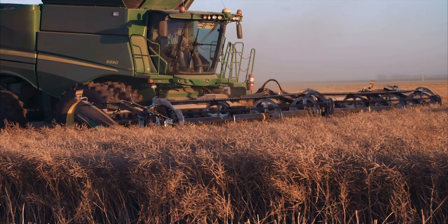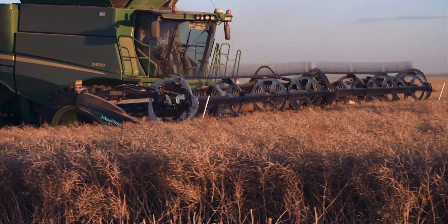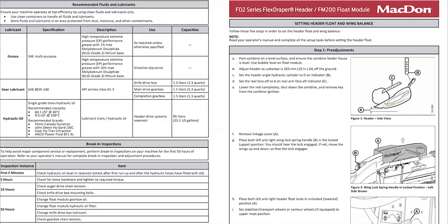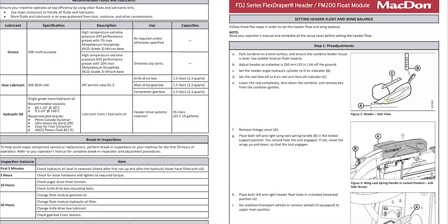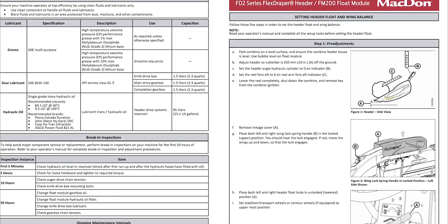To set the header float and wing balance, follow the information contained in the FD2 Quick Card. The instruction values listed are general starting points and may need to be amended to suit individual field conditions.